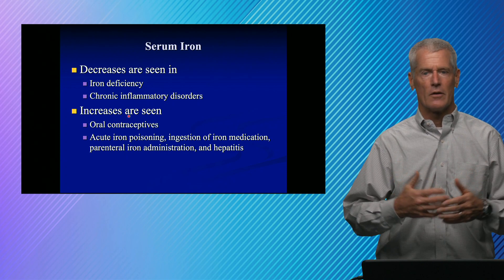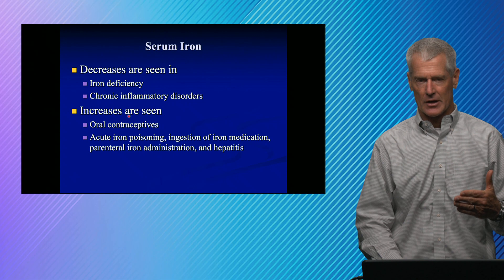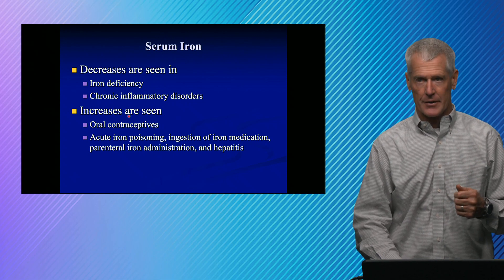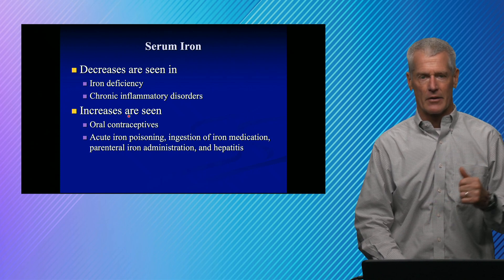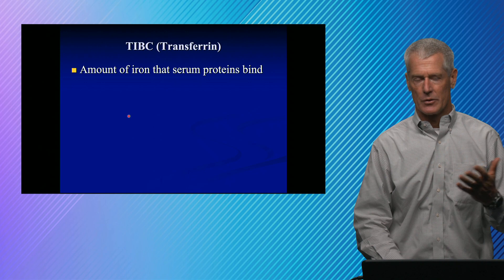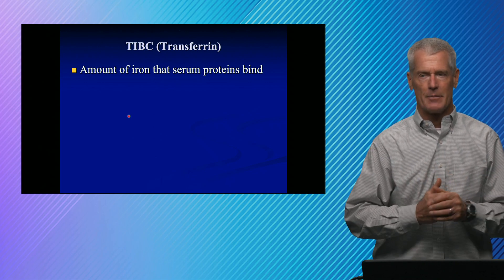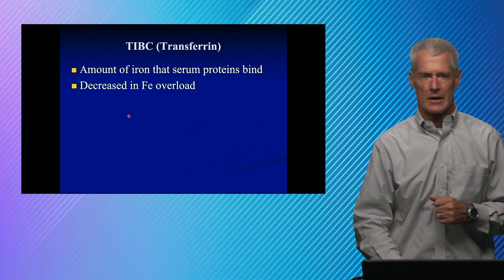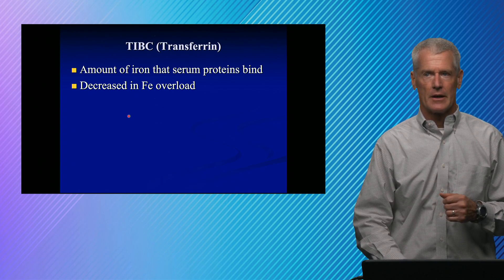If you have an acute overdose, that makes sense that your serum iron would be up. Oral contraceptives increase transferrin, which increases the amount of iron that's bound. Whereas in iron overload or with excess iron medications, it's actually the iron that's going to be high. TIBC and transferrin are synonymous terms — transferrin determines TIBC. It's really the amount of iron that can be bound to this particular protein. It decreases in iron overload.